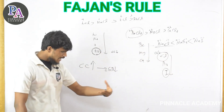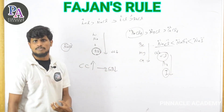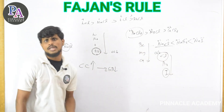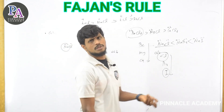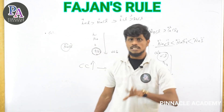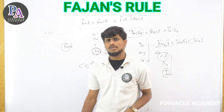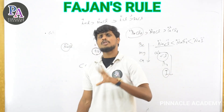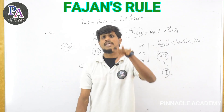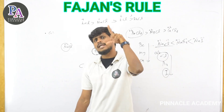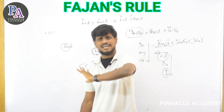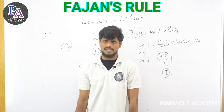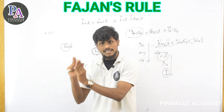Now we summarize: covalent character increases with increasing polarization. The covalent character of a bond depends on the polarizing power of the cation and the polarizability of the anion. This is the essence of Fajans Rule — determining when an ionic bond acquires covalent character.